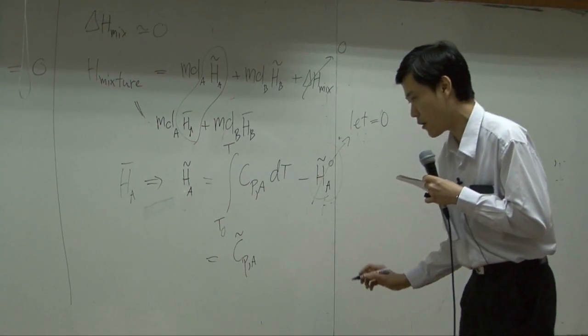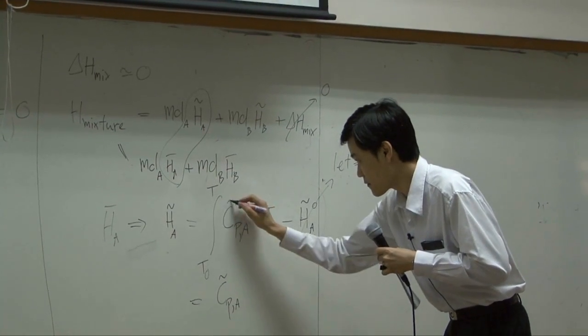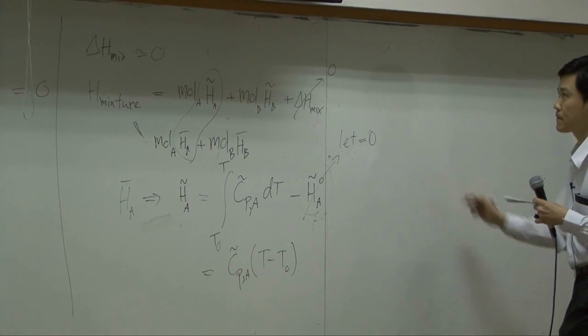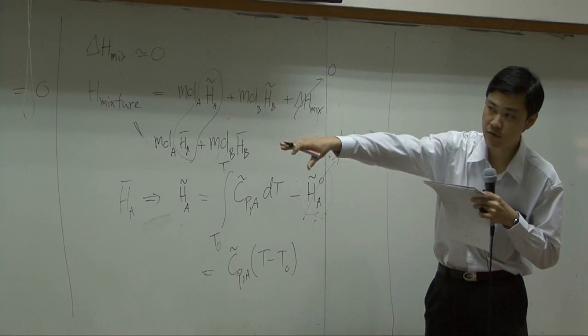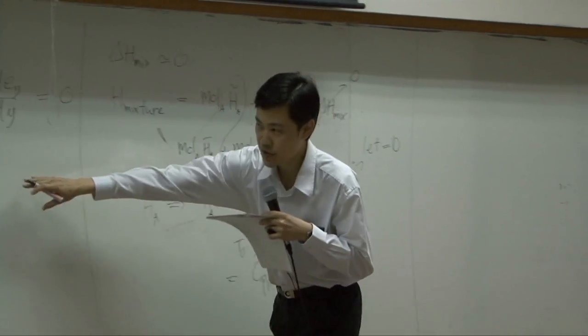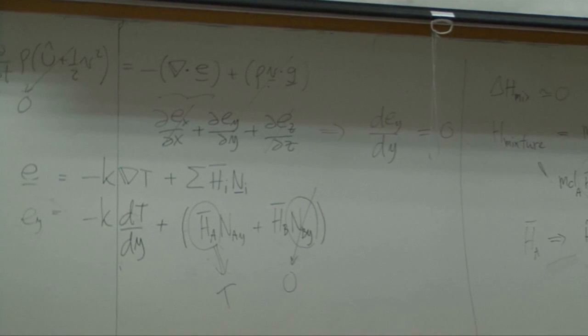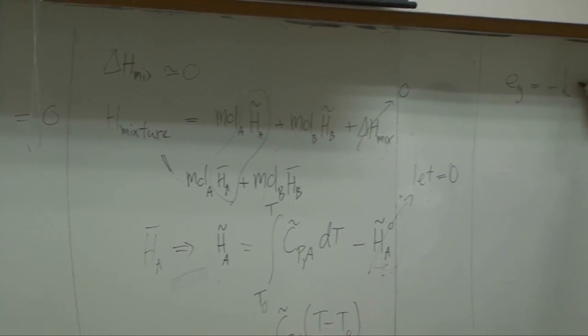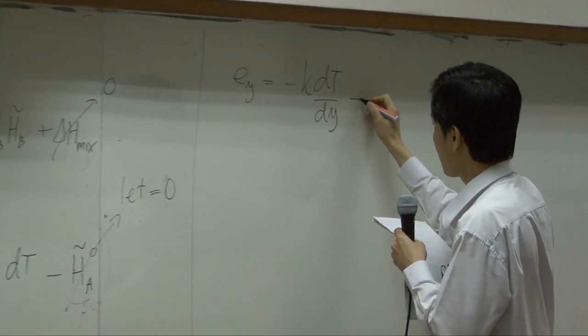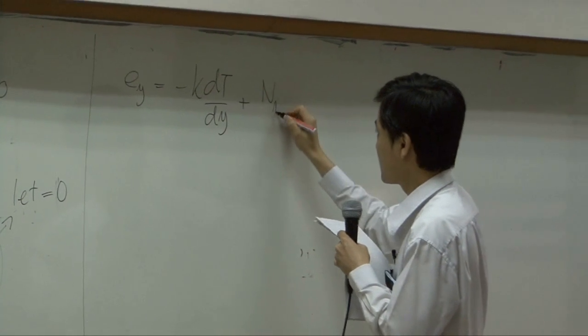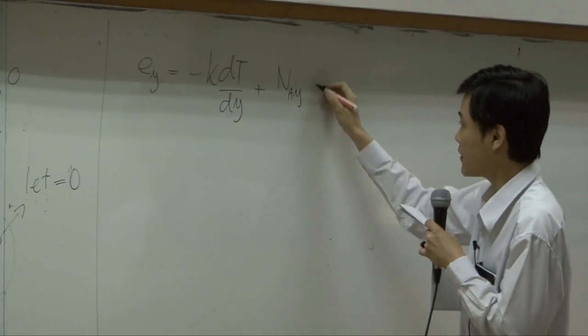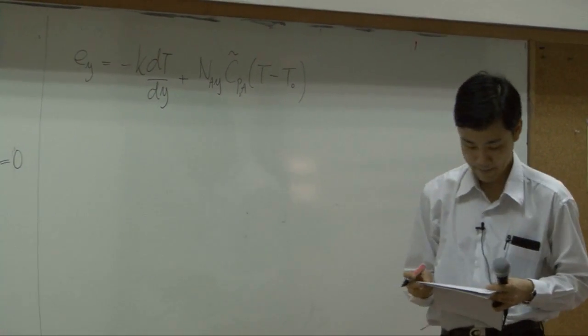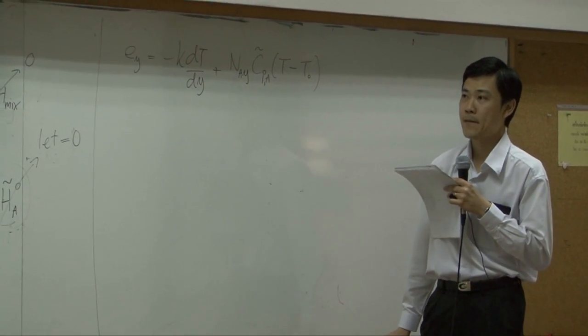Plug this one back to this equation so that we can eventually convert everything to temperature. So EY would equal to minus KDT by DY plus NAY times Cp of A, T minus T0.